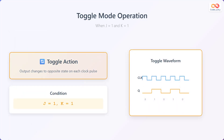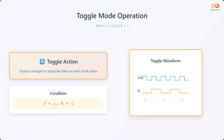Let's delve into the toggle mode operation of the JK flip-flop, which occurs when J equals 1 and K equals 1. In this mode, the output changes to the opposite state on each clock pulse, resulting in a toggle action. As shown in the waveform diagram, with each clock pulse, the output Q toggles between 0 and 1, demonstrating frequency division by 2. The condition for toggle mode is that J equals 1 and K equals 1.